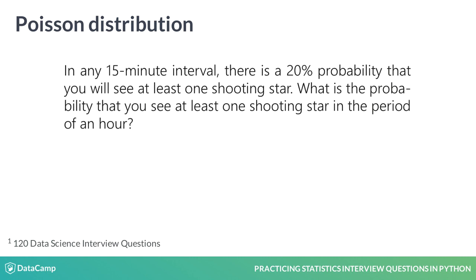Poisson is the way to go for counting events over time, given some continuous rate. In this example, you're given a time interval and a rate. What's the probability that you see at least one shooting star in an hour?